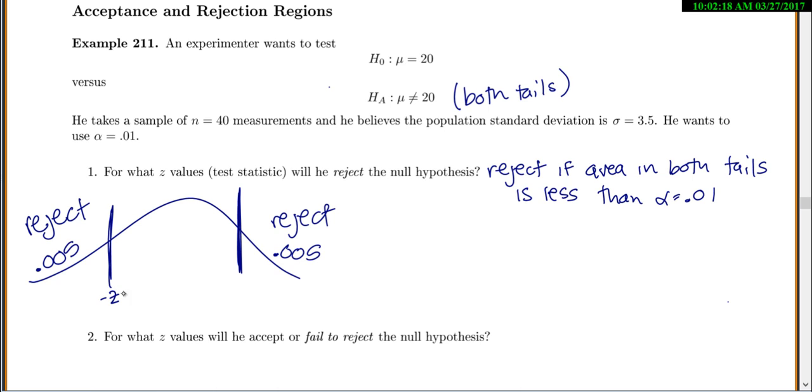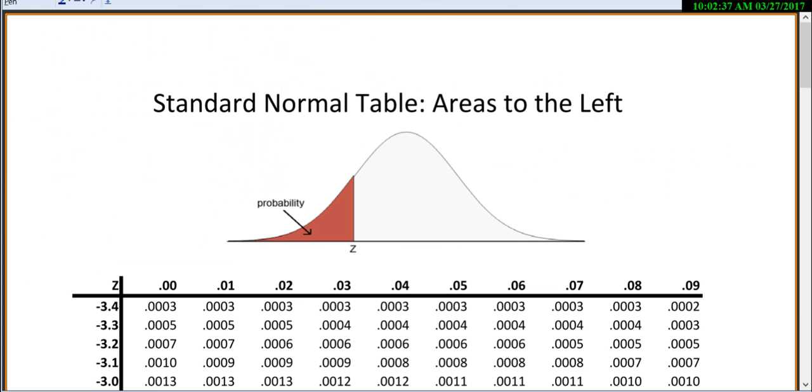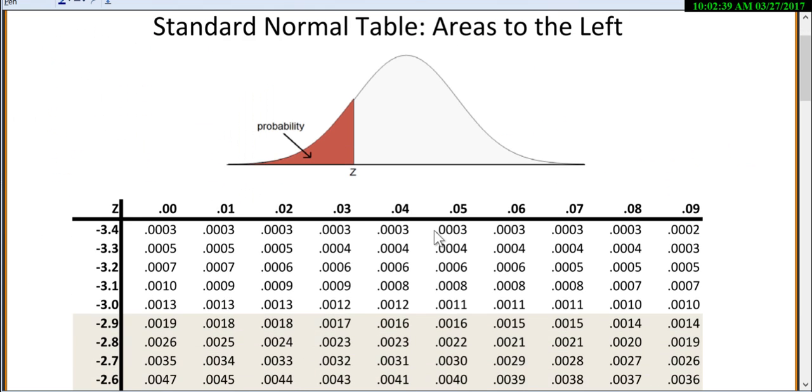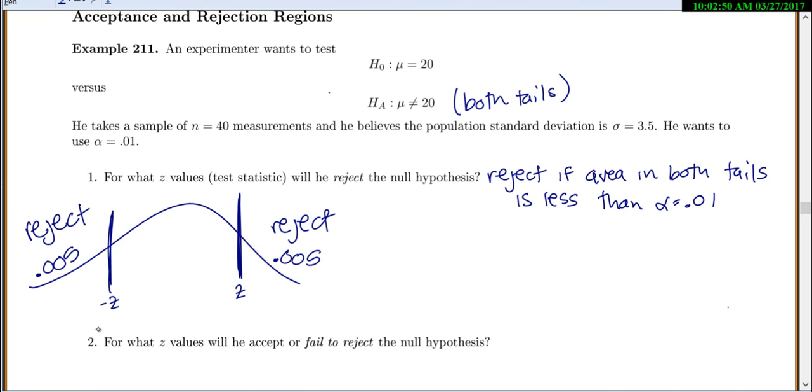So we want to find this would be our negative z-value, this would be our z-value. So you go to your z-table, and we look at 0.005 as an area. So inside the table, we're looking at 0.005. Looks like we're kind of evenly between negative 2.57 and negative 2.58. So z is negative 2.575. And this z is 2.575.